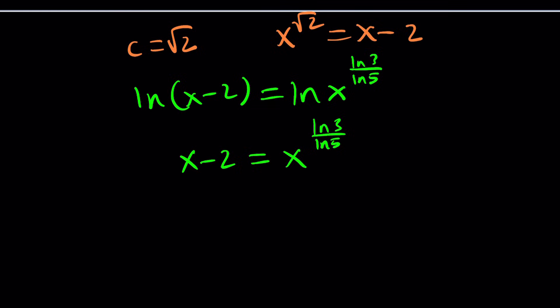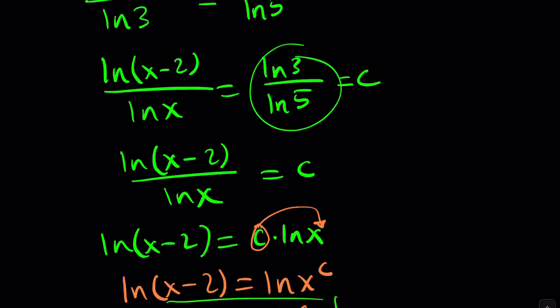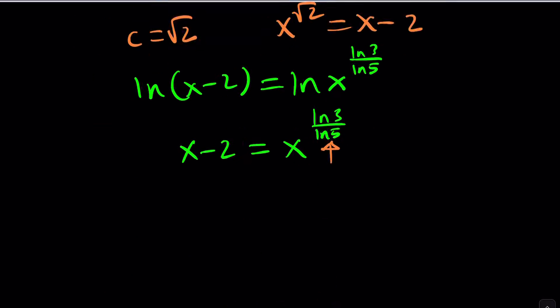You can at least try replacing c with whatever it is. ln(x-2) equals ln(x) to the power ln(3)/ln(5). At this point, you can ignore the lns and write this as x minus 2 equals x to the power ln(3)/ln(5). A very non-standard transcendental equation which you cannot solve algebraically. So we kind of got stuck. This was the first method.